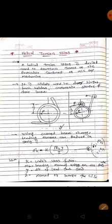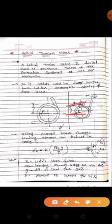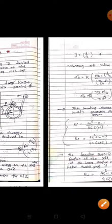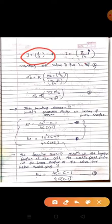K means the Wahl stress factor. M_b means the bending moment acting on the spring wire. y is the distance of the load from the axis, and I is the moment of inertia of the cross section. For a circular cross section: y equals d divided by 2, and I equals pi by 64 times d raised to 4.